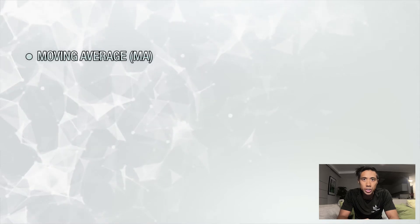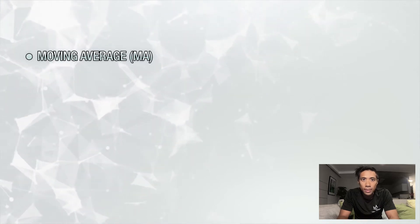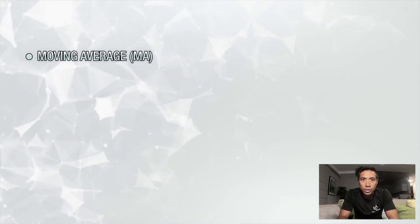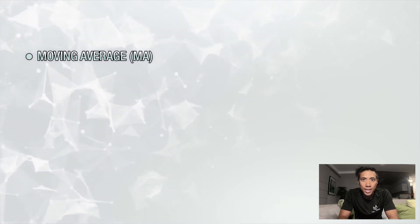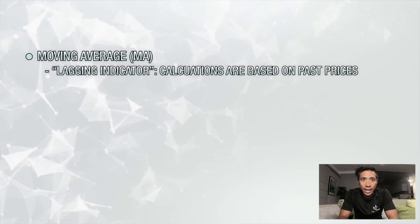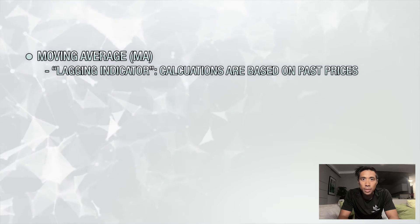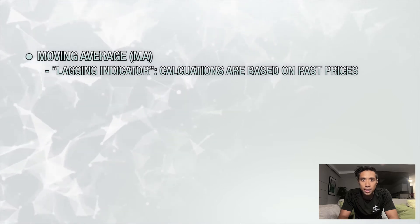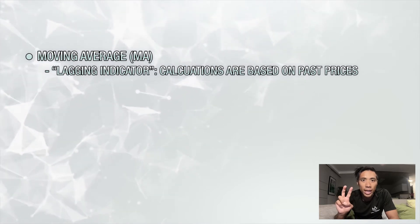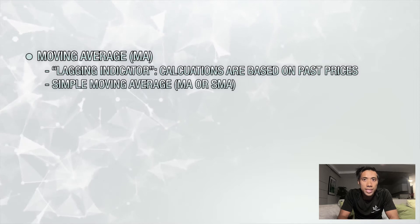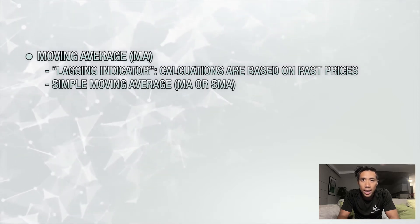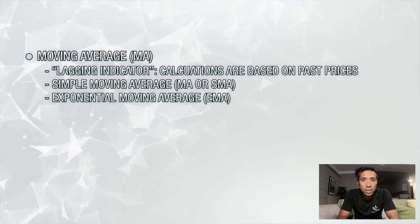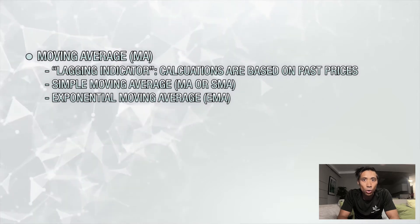Today, I'd like to talk to you about moving averages, or MAs for short. Like many other indicators such as RSI or MACD, moving averages are what's known as a lagging indicator because their calculations are based on past prices. There are two types of moving averages you should be aware of: the simple moving average, abbreviated by either MA or SMA, and the exponential moving average, or EMA.